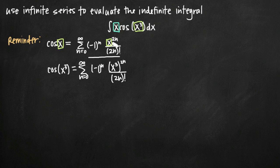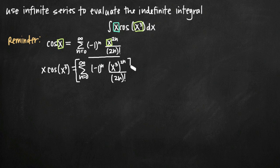We already have that, so we're going to modify it to include the x cubed and the extra x. Once we do, we can integrate both sides and evaluate the integral using the infinite series. So back to where we were: we plugged in x cubed in place of x, giving us an infinite series expression for cosine of x cubed. But our function is x times cosine of x cubed, so we need to multiply both sides by x.